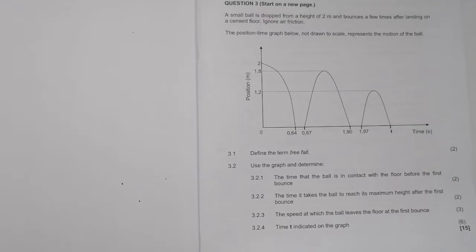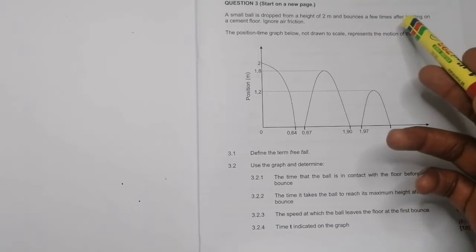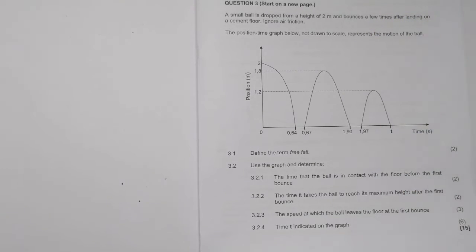Alright, now let's look at the November 2020 question three. So I'm going to try and discuss this one with you. I love it because it's a graph, and we must always be able to explain questions that have to do with graphs. Alright, now let's go into it. They say a small ball is dropped from a height of two meters and bounces a few times after landing on a cement floor.